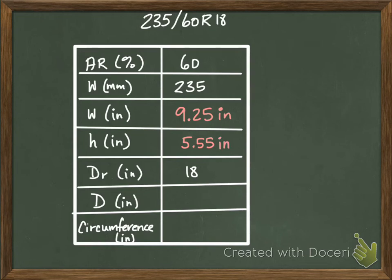We haven't calculated the diameter yet, but from before we saw, if this is the tire, we have the diameter of the rim here. Now we have a height here and a height here. So my total diameter is going to be the diameter of the rim plus the height on the top and the height on the bottom, so two heights. So I can go 5.55 times 2 plus 18, and that's going to give me 29.1 inches.